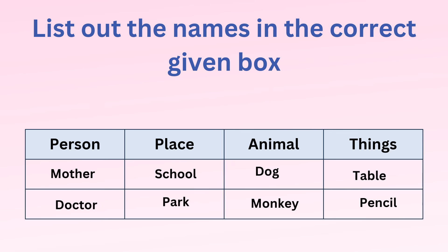Mother and doctor are the names of persons. School and park are the names of places. Dog and monkey are the names of animals. Table and pencil are the names of things.